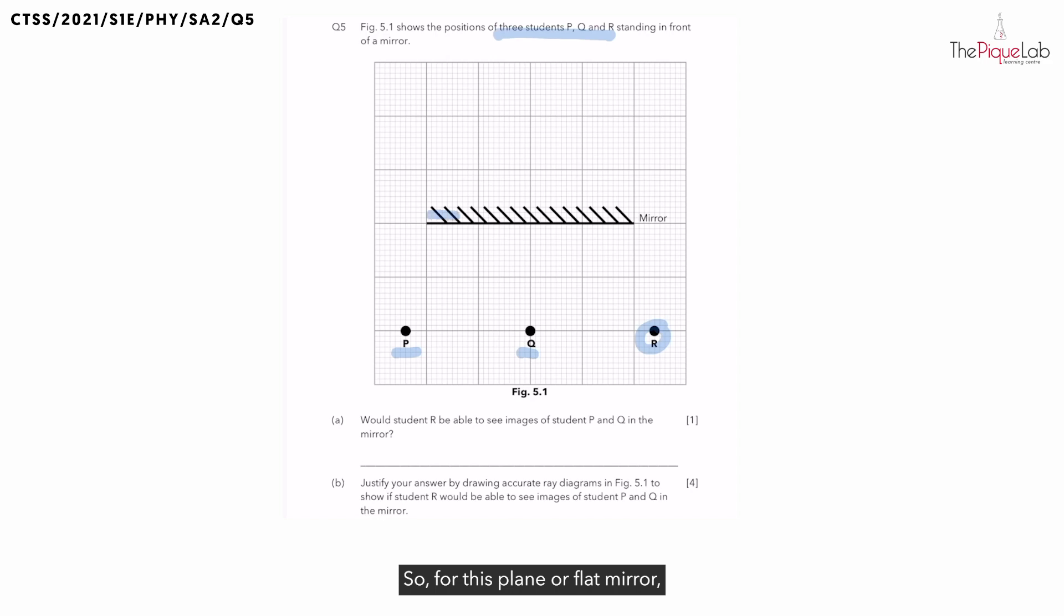So for this plane or flat mirror, the shaded side that I highlighted in blue represents the back of the mirror. So using the first law, all the rays and the normal that you should be drawing should be on the front side of the mirror.